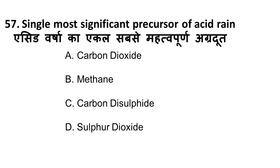Next question: what is the single most significant precursor of acid rain? Acid rain contains sulfuric acid and nitric acid. Sulfur dioxide is the precursor for sulfuric acid. So the correct answer is sulfur dioxide.